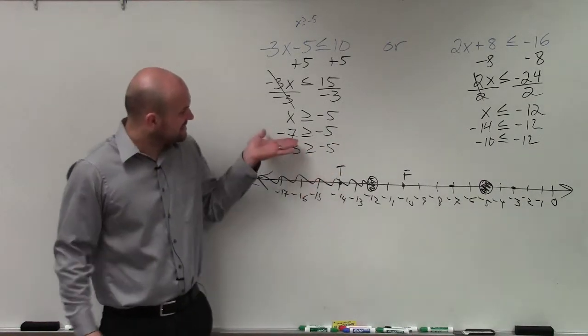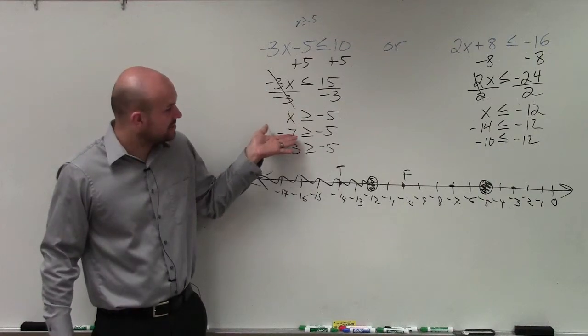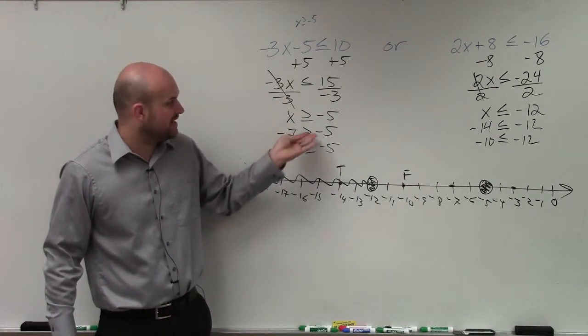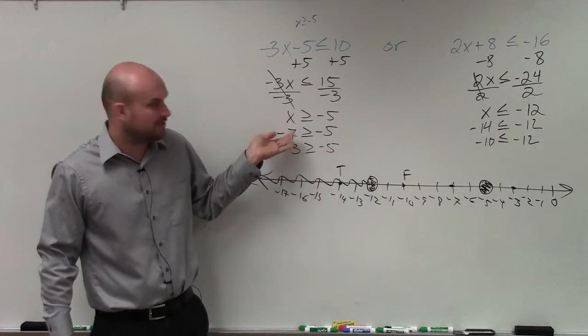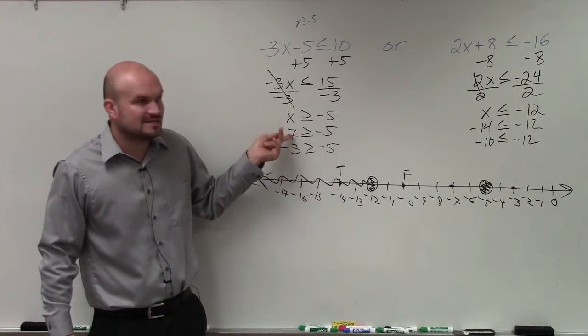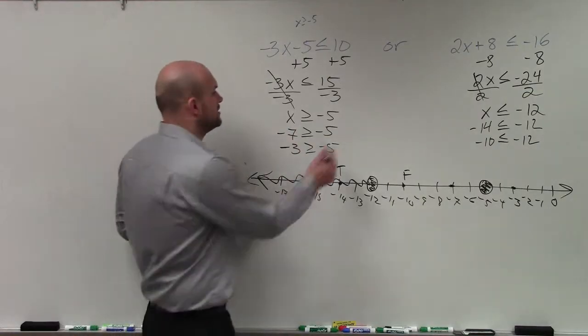Again, what this states is, if you owe somebody $7, do you have more or less money than if you owed them $5? And obviously, you'd have less money if you owed them $7. Right? So 7 is not greater than. It's less than. So that's false.